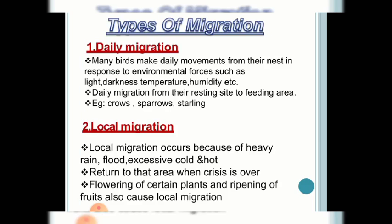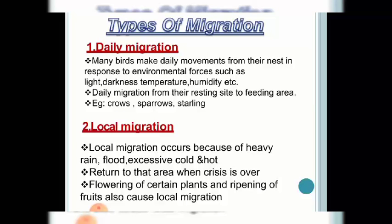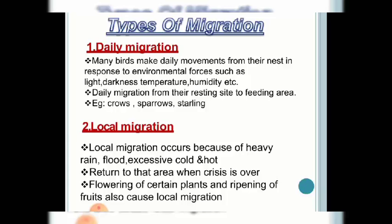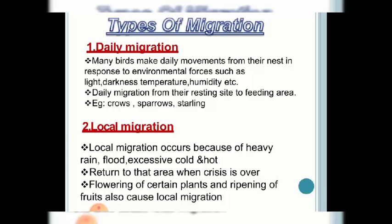Moving on to types of migration, the first type is daily migration. Many birds make daily movements from their nest to gather food and return to their shelter. We see this in daily life — early morning bird chirping is due to photoperiodism. As light intensity increases, bird movement begins. Examples include crow, sparrows, and starlings. This type depends on temperature, darkness, and humidity.